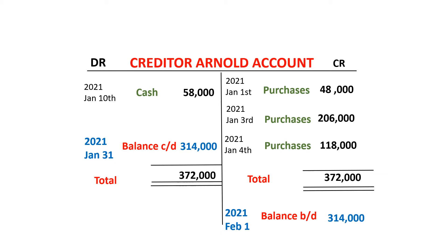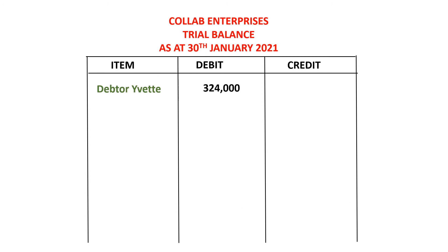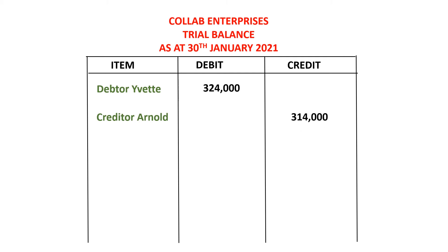Because it has a credit balance of 314,000, this is how we post it in the trial balance. We shall write the name of the account — in this case, the creditor account — and then write the credit balance in its column. I've just used these two examples to show how we post to the trial balance when it is a debit balance and when it is a credit balance. These two accounts are just arbitrary examples, but it's a whole list of different accounts that we post, and eventually we add up the totals.